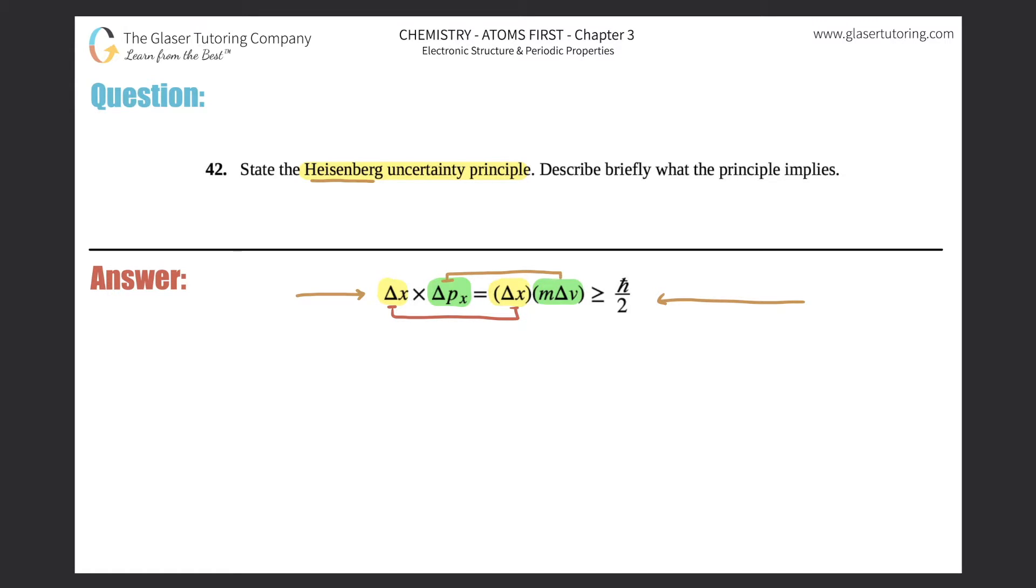The x is talking about a position, so where an electron is located. And the p is talking about an electron's momentum. Momentum usually in physics will be a p variable, and p always equals mass times velocity. That's why it's m times a change in velocity here.